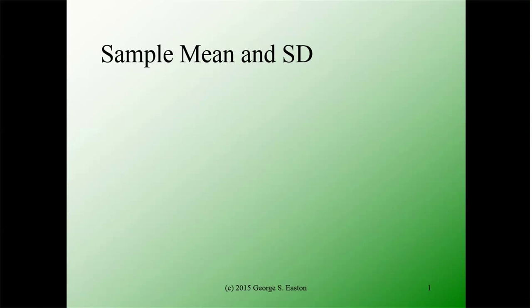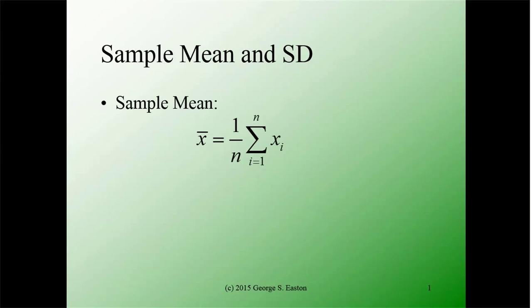To compute the sample correlation you need the sample mean, sample standard deviation for each variable, and the sample covariance. The formula for the sample mean is the sum of the observations divided by the number of observations — using capital sigma notation, summing x sub i for i from 1 to n, then dividing by n. This parallels the way looping was originally conceived in computer languages.